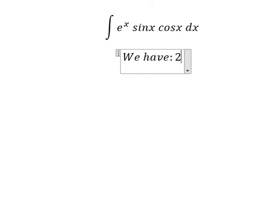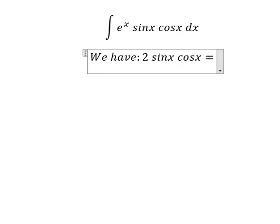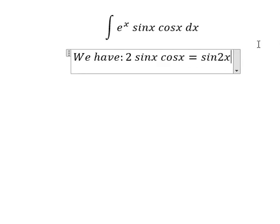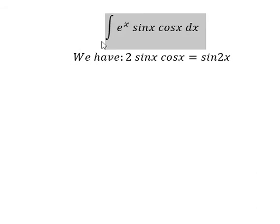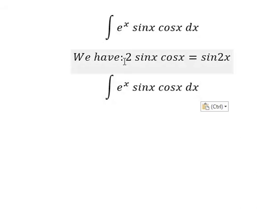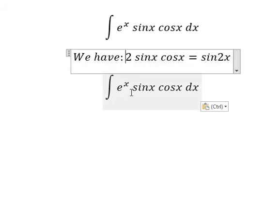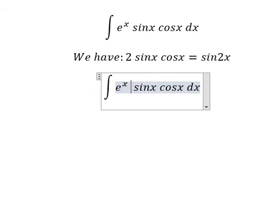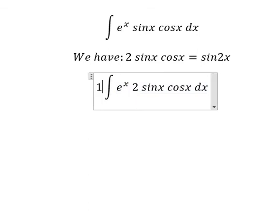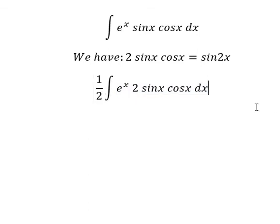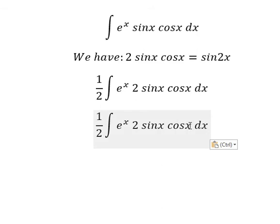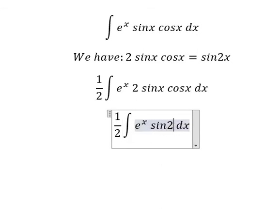That's about 2 sin(x) cos(x) equals sin(2x), because we are missing the number 2 in here. So we need to put number 2 in here, and then we divide by 2. So this one you will have sin(2x).